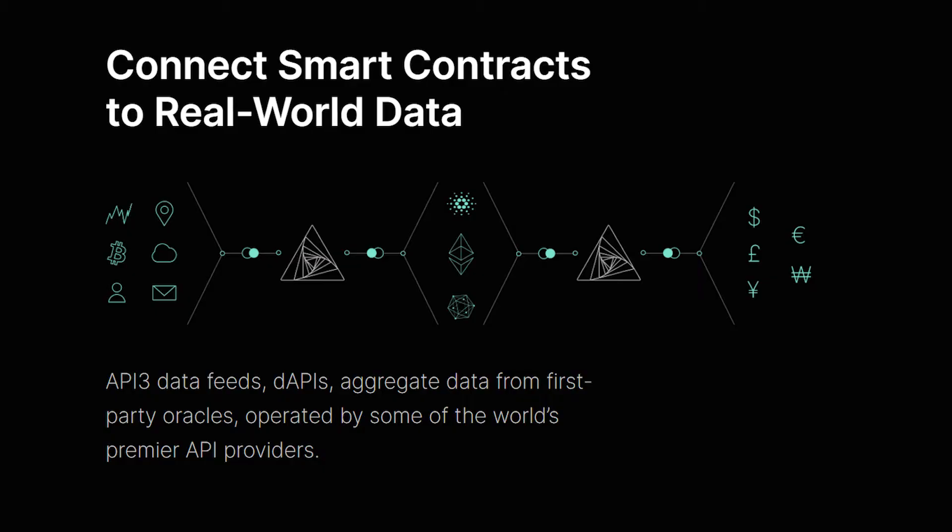Businesses provide a wide variety of two-way data delivery services over APIs, ranging from asset price data to traditional financial transactions. It is critical for decentralized applications to be able to access the kinds of services that APIs offer in order to interact with the real world. Yet these APIs are generally incompatible with decentralized applications.